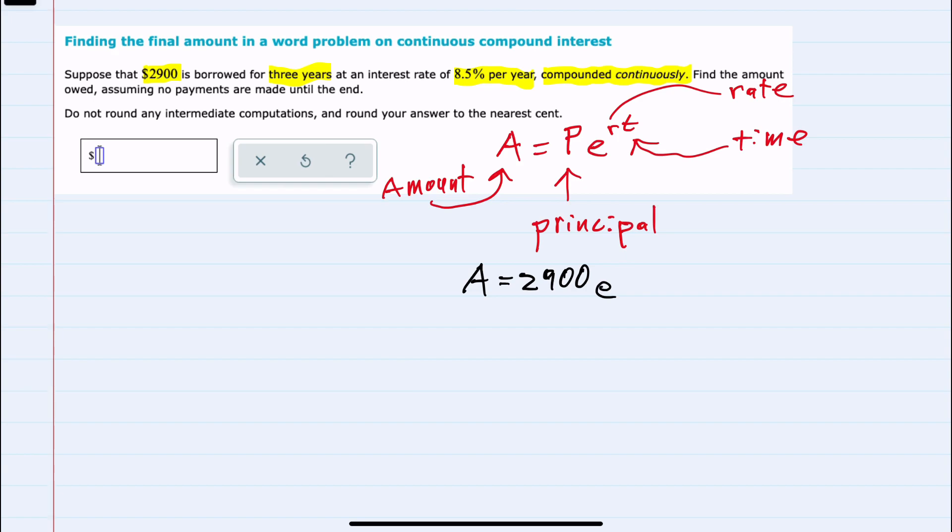E is our constant. The rate is 8.5%, but we need to convert that to a decimal to be 0.085 times T, which is three years.